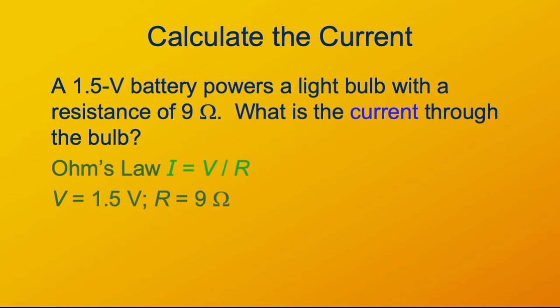Do you know the voltage? Yes, you do. 1.5 volts. Do you know the resistance? Yes, you do. It's 9 ohms. So what's 1.5 volts divided by 9 ohms? One sixth. So one sixth of an ampere.